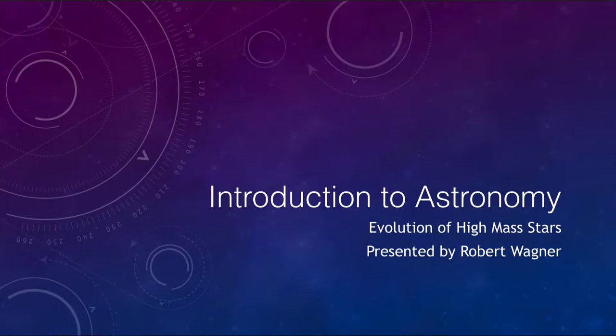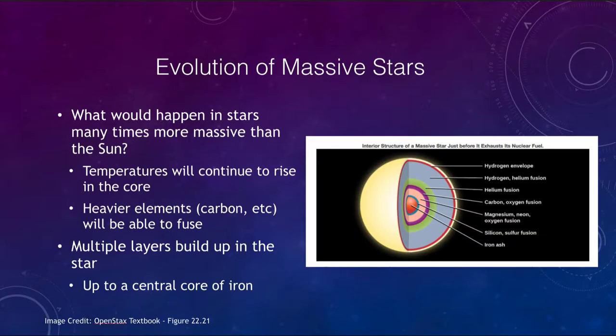Let's look at the evolution of a more massive star. This should look relatively similar to what we had seen for the lower mass stars, except that we had only built up carbon in the core. When something is more massive than the sun, the temperatures will continue to rise and eventually we'll get to the point where carbon is able to fuse together. We will build up multiple layers: hydrogen in the envelope, then hydrogen and helium fusion, then carbon and oxygen, magnesium, neon and oxygen, silicon and sulfur, and finally up to iron.